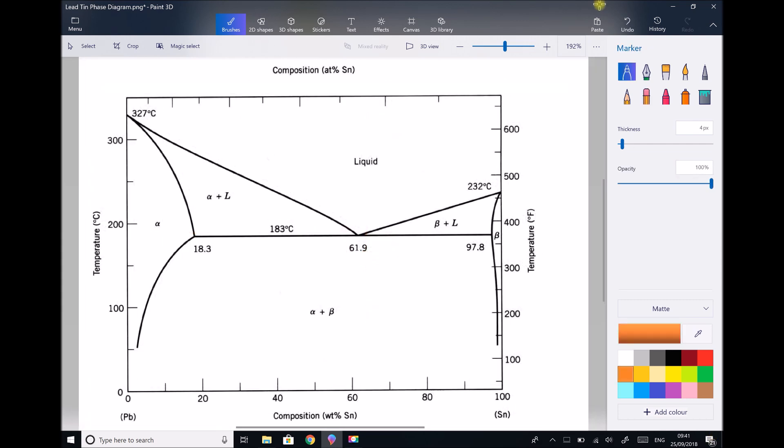So at a composition of 61.9% tin, if we start at a temperature of say 200 degrees C and we begin cooling, then when we reach a temperature of 183 degrees C our liquid is going to begin to turn to solid. And that change is going to occur completely at the temperature of 183 degrees C. By the time we get to 182 degrees C all of our liquid has turned to solid. And it's turned to what we call alpha plus beta solid.